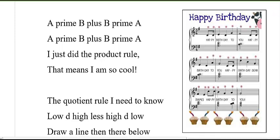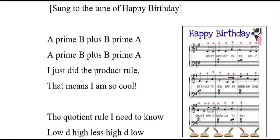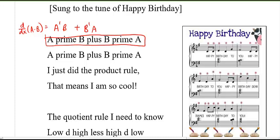Instead of using f and s for the product rule, I like to use a and b. So the derivative of a times b is: a′b + b′a. That's the first verse: 'a′b plus b′a, a′b plus b′a, I just did the product rule, that means I am so cool.'